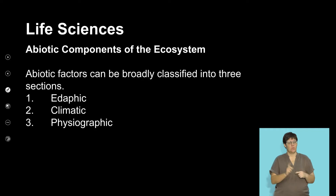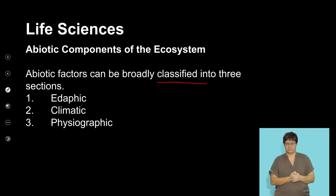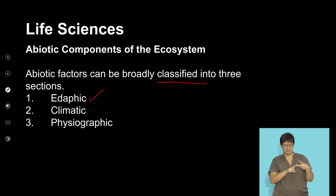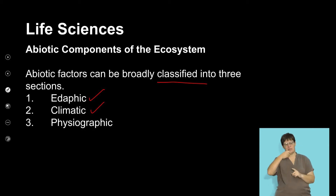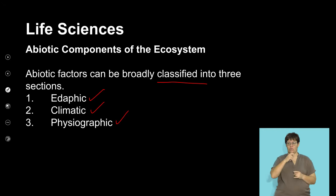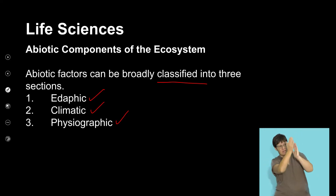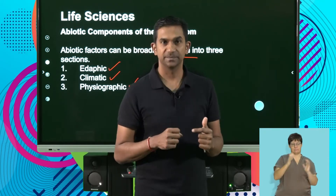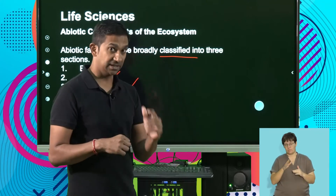The abiotic components are broadly classified into three sections. First we're going to look at the edaphic factors, which are related to the soil. The second would be the climatic factors — factors in the climate such as temperature and pH. We're also going to look at the physiographic factors, which are essentially the layout of the land, including things like altitude, slope, and aspect.